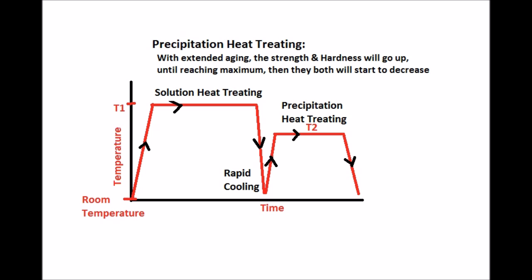As you can see in this graph, the temperature is brought up to and maintained in solution heat treating until it all becomes one solution. Then it is rapidly cooled to room temperature. Then it is brought up to a secondary temperature, which is less than the first, until it reaches desired aging, then cooled to room temperature.